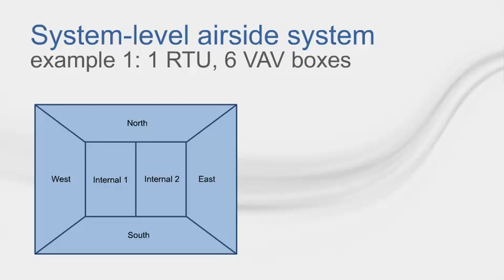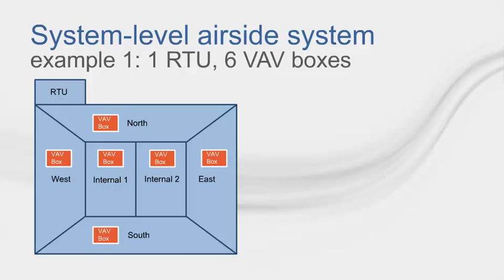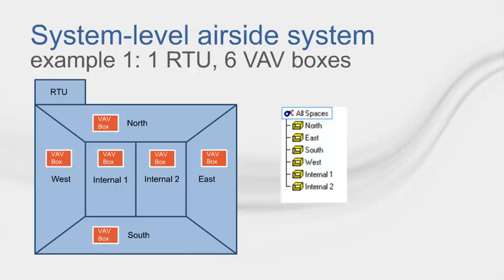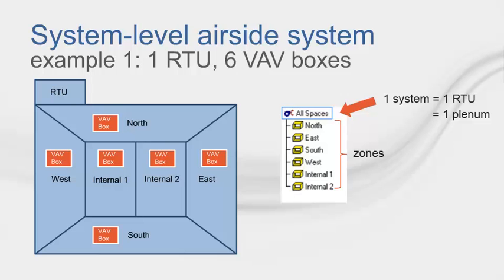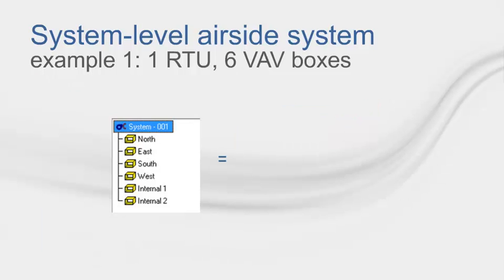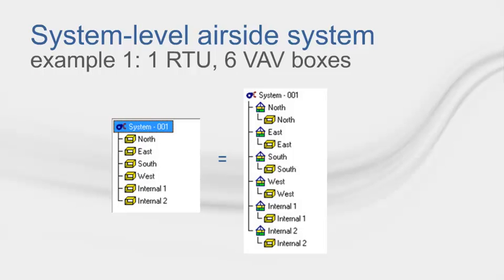In this example, we want one rooftop unit and every room to receive a VAV box. In TRACE, this would look something like this. I have one system, so one RTU and one plenum. I have six zones, so six VAV boxes. You may notice that I have six rooms, not six zones. But in TRACE, any room placed directly under a system is considered a zone — having a room directly under the system is just like having a zone with one room under it.